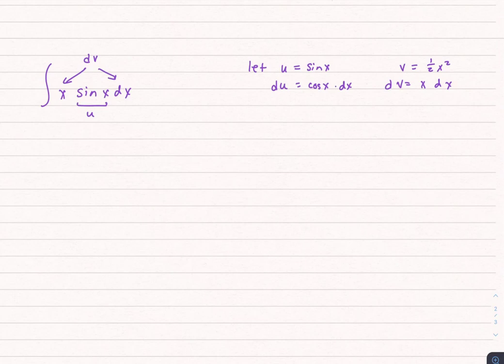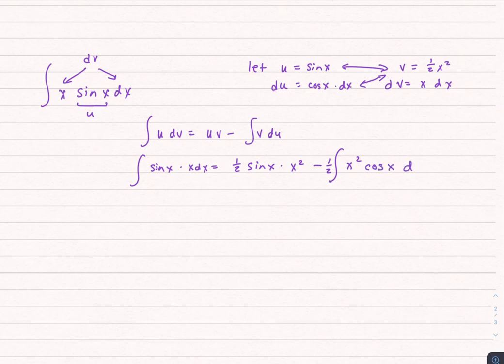This is going to be, we're going to say u dv equals u times v minus v du. So we've got sine x times x dx equals u times v. I'm going to go across first. So this is going to be 1/2 sine x times x squared minus the integral. And now we're going to go this way, 1/2 x squared cosine x dx.